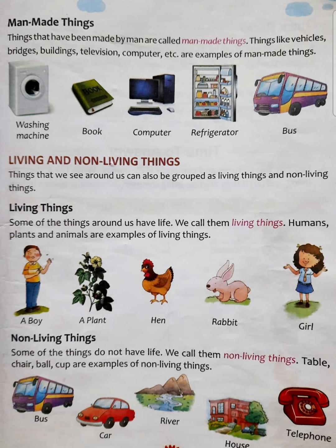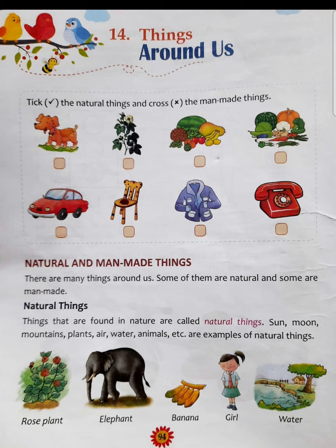Toh ab aapko clear hai ki kaunsi things natural hoti hain aur kaunsi man-made hoti hain. Jinko mother nature ne banaya hai, woh sabhi things natural hongi. Aur jinko man yaane ki insaan ne banaya hai, woh sabhi man-made things kehlaati hain. Now you can do this exercise on your own — tick the natural things and cross the man-made things.